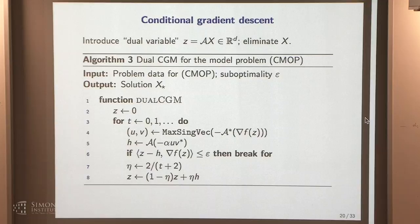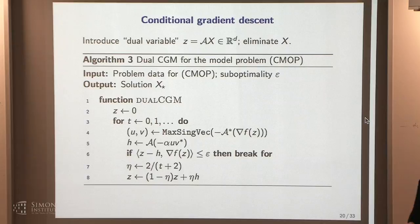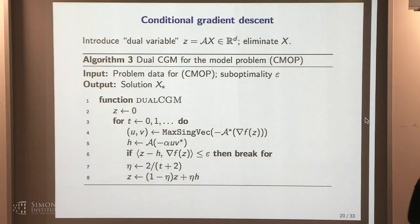The only problem is that when we're done, we don't have the solution X. You might hope to recover X from z, but that's not always possible. Consider matrix completion where you can exactly complete the matrix — z is zero in that case, but knowing z=0 doesn't tell you what X is, just as knowing a few entries doesn't let you complete the matrix. So we've solved the problem but we need to find the solution.